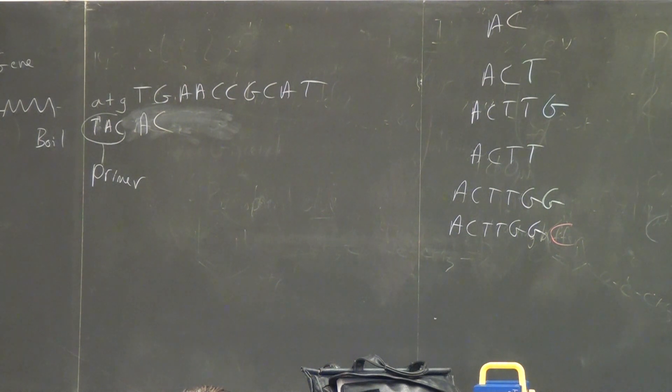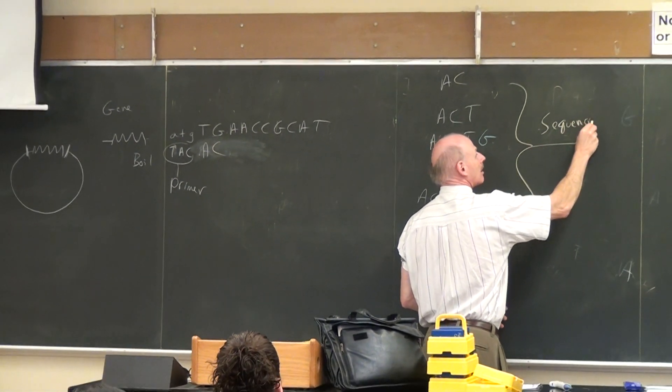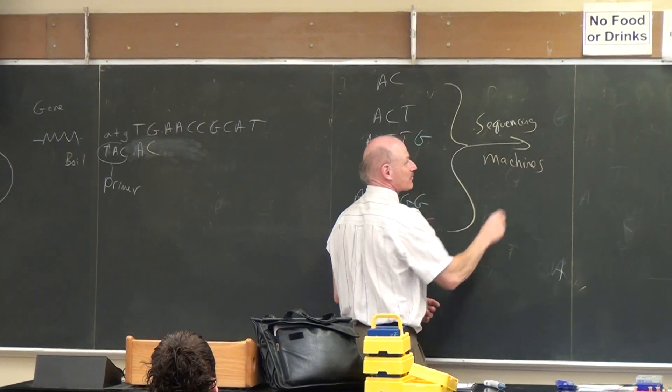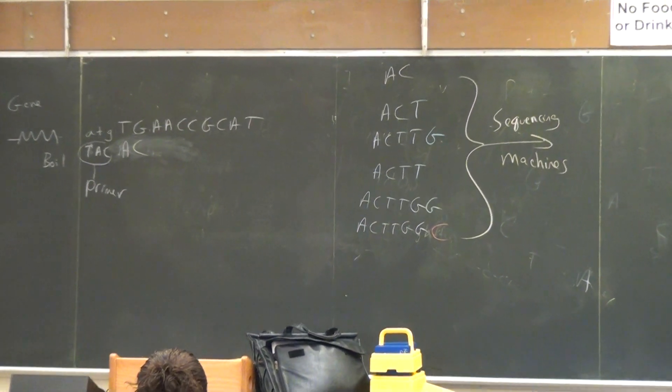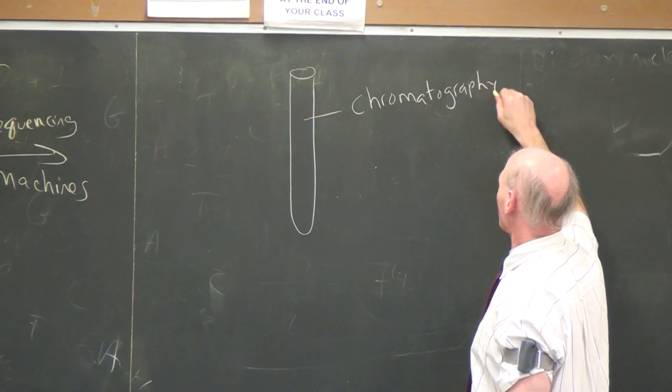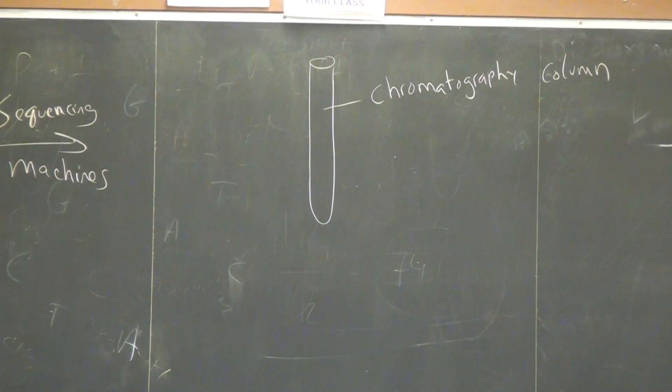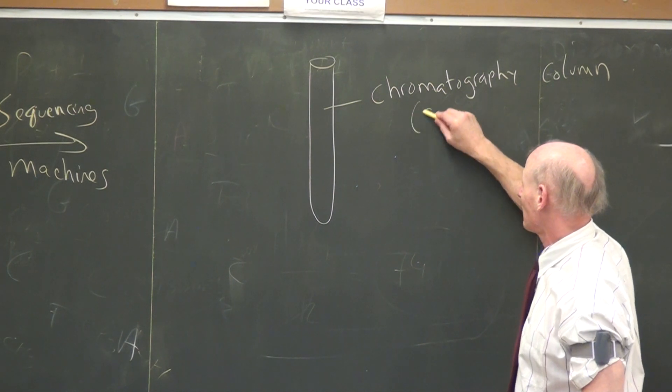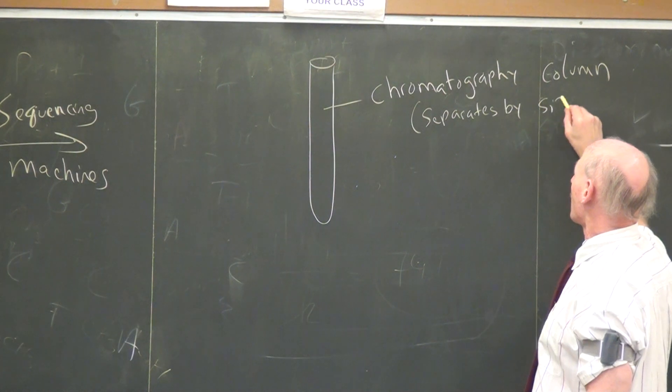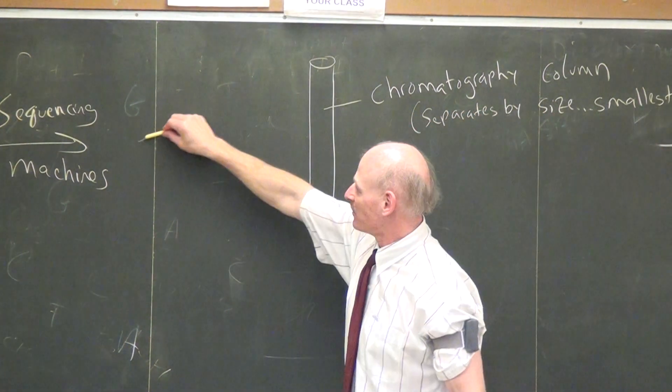What you do next is that there's a sequencing machine you feed these into. They just normally call these sequencers. And the sequencing machine has a chromatography column to start off with. Now remember what chromatography is. Chromatography is a way of separating molecules out from each other based on various things. It depends on what type of chromatography column it is. But this type of column separates them by size. Sort of like what you did. Remember when you ran the agarose gel that separates the pieces of DNA by size?